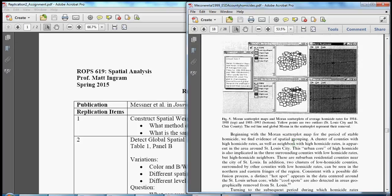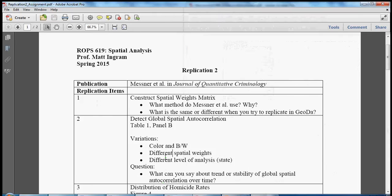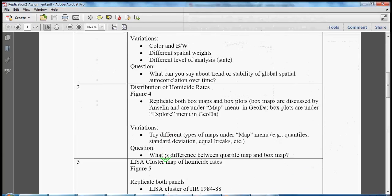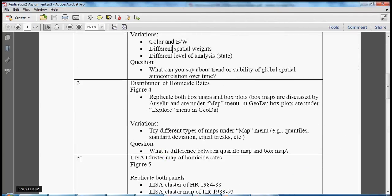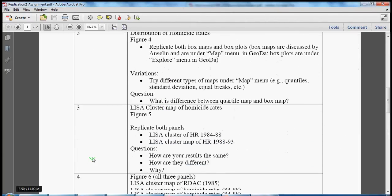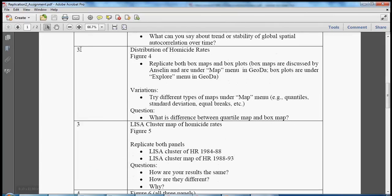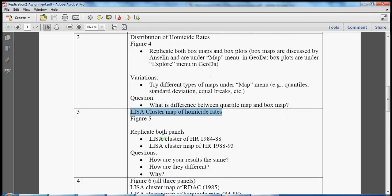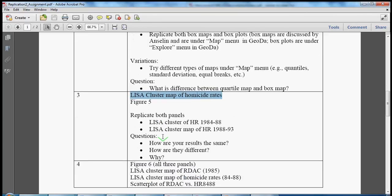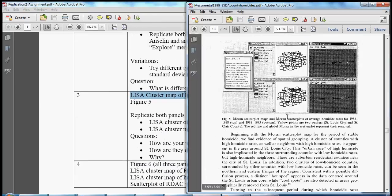The first LISA cluster or set of LISA cluster maps that we want to replicate are those from figure five. That should be item four in the replication exercise, not a repeated number three. So we're going to do this one here, figure five, and we want to replicate both panels here, that is the top panel and the bottom panel.